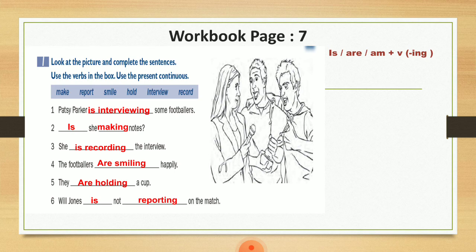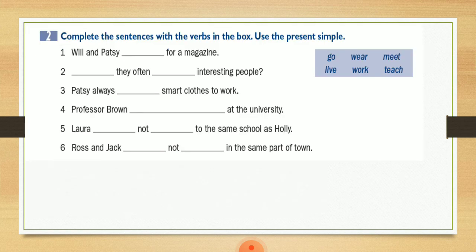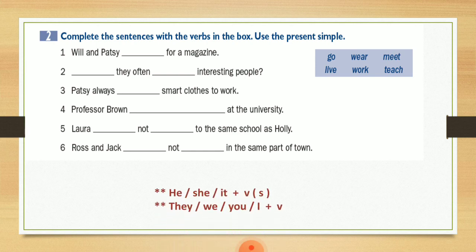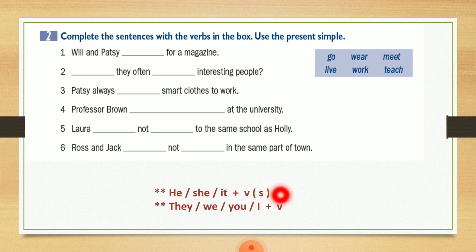Let's move to the next question — exercise two. نفس المبدأ لكن هون أحددلي إني لازم أستخدم the present simple. وما ننسى إنه بالـ simple present إذا كان عندي subject هي she, he or it رح أستخدم الـ verb plus s. وإذا كان they, we, I and you رح أستخدم الـ verb بدون s.